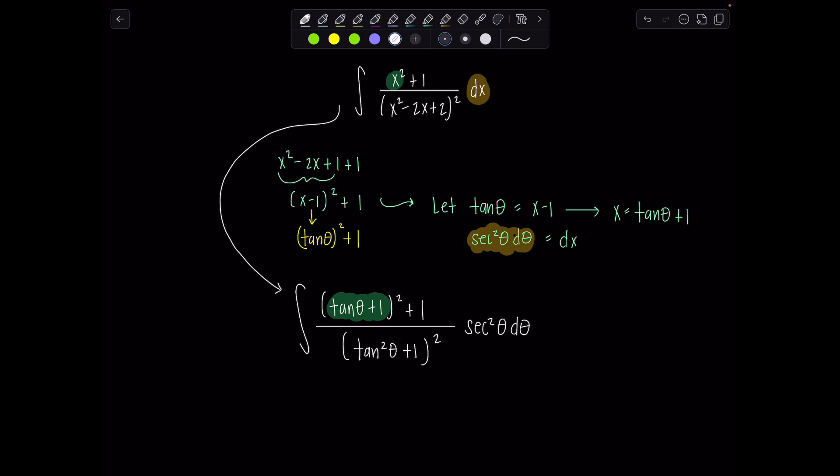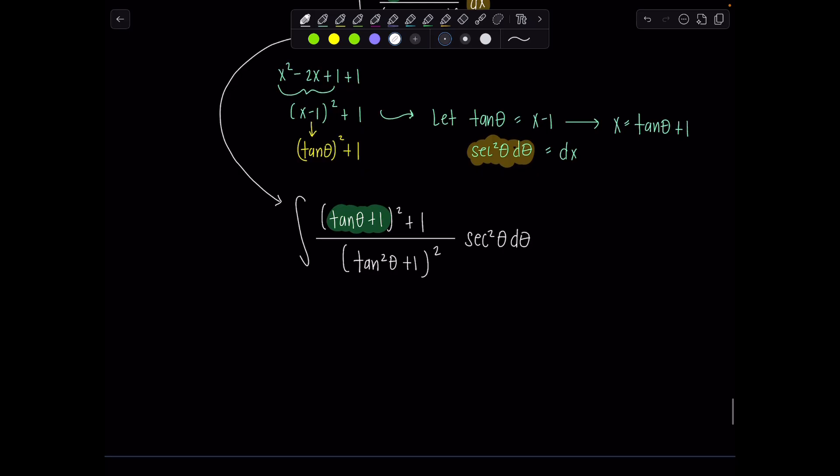Lovely. Now we're just going to simplify. So multiply out the entire numerator. So it'll be tan squared theta plus 2 tan theta plus 1 plus 1, so plus 2, over, and then now here's where the beauty of trig sub comes in. We're going to use our Pythagorean identity, replace tan squared theta plus 1 with secant squared theta, and then that gets squared. So now we have secant to the fourth theta, and then another secant squared theta, d theta out here.